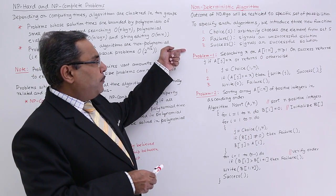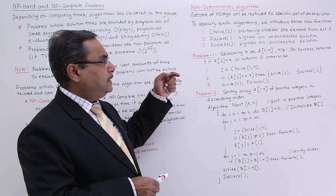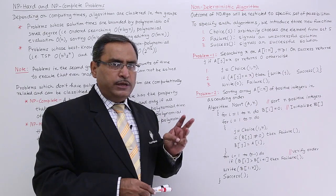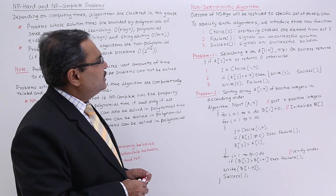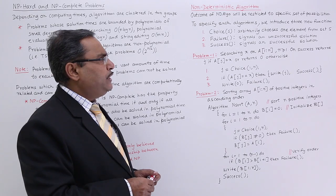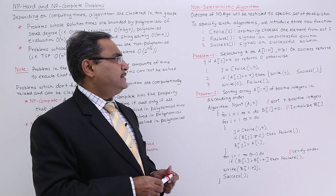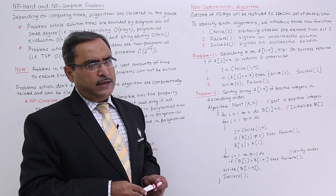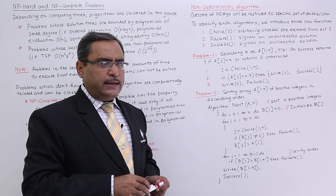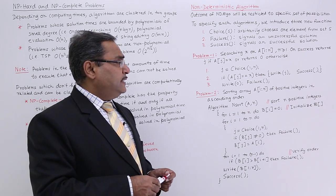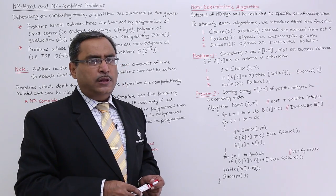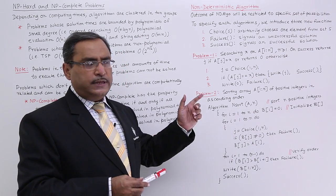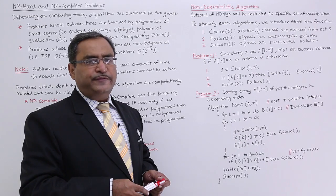We will be discussing non-deterministic algorithm problems 1 and 2. But before going to those problems, let me introduce three different functions used to specify such algorithms. One is Choice(S), which arbitrarily chooses one item from the set S. Failure is a function that signals an unsuccessful completion. Success signals a successful completion.